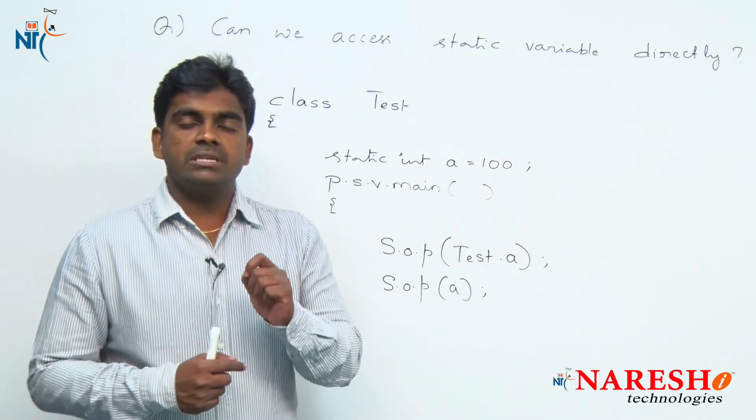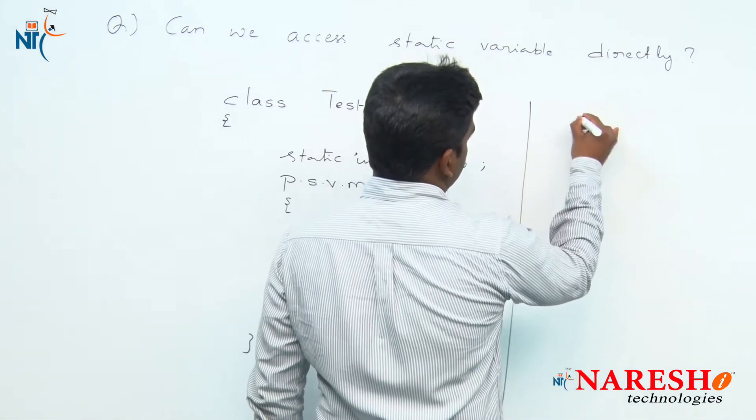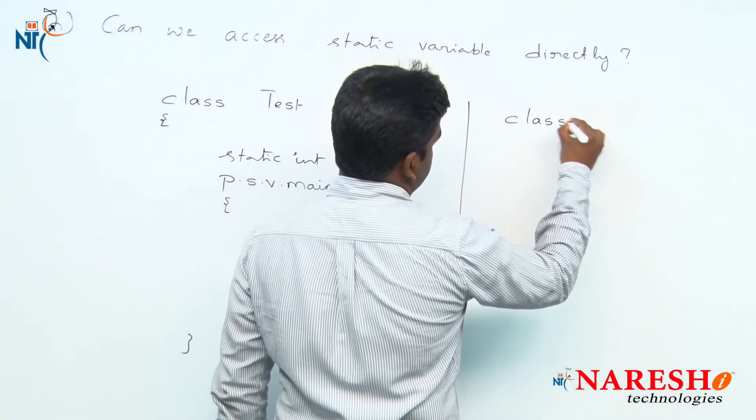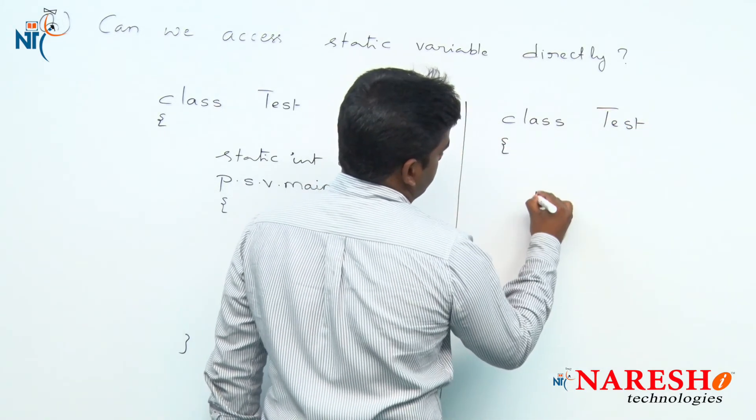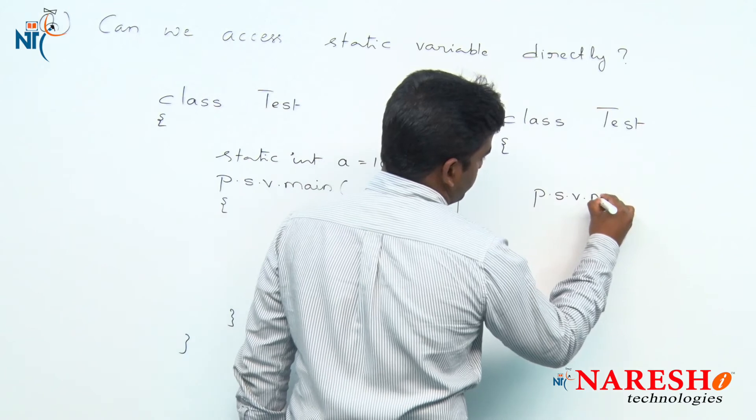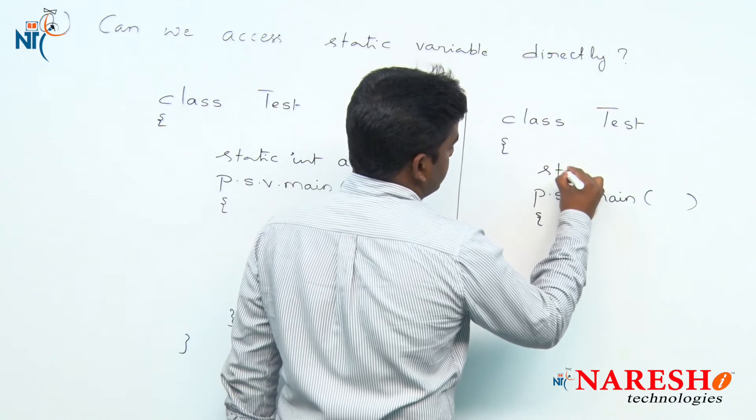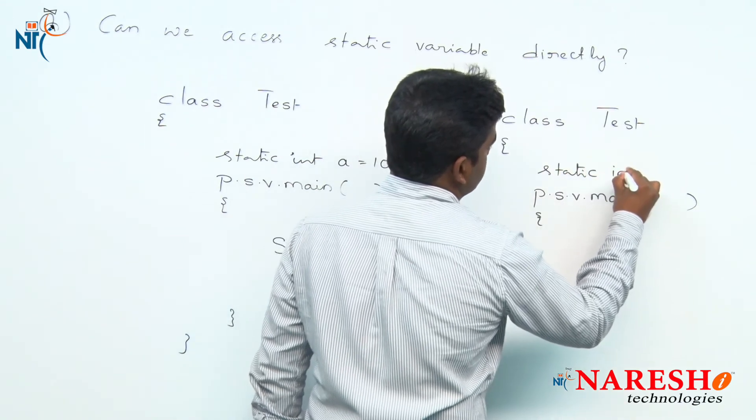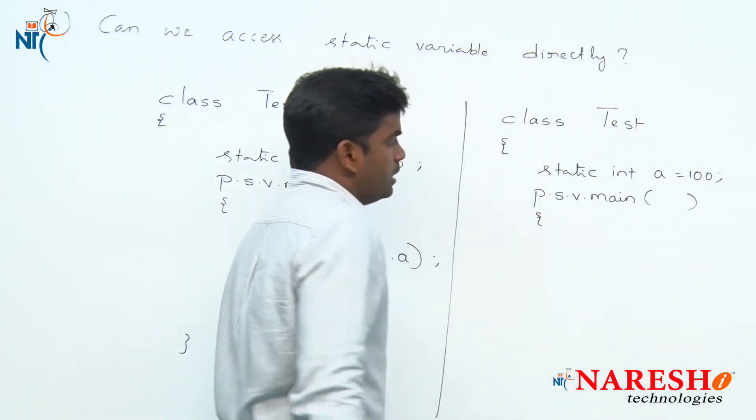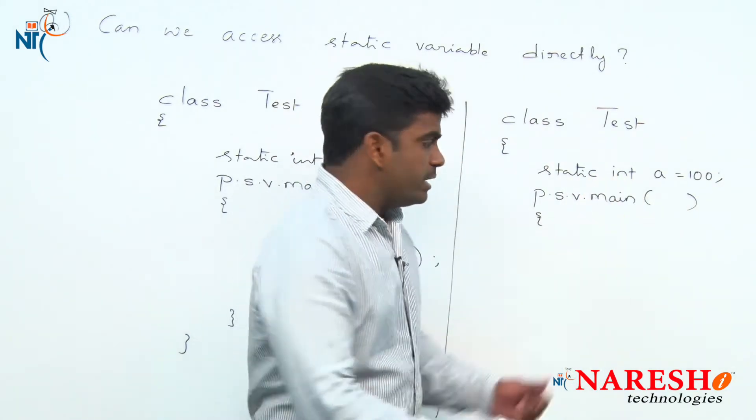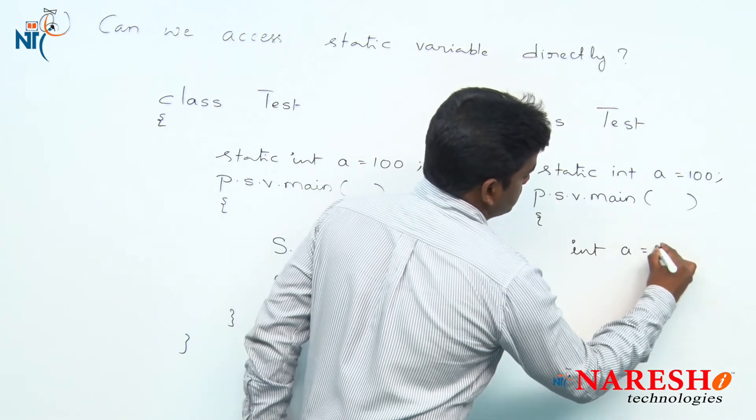But with the same name, if local variable is present, let's see. Take the same Test class and inside main method, we are writing in the same way. Now we are declaring static variable: static int a = 100.